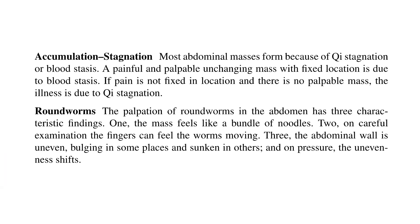Accumulation and stagnation: Most abdominal masses form because of chi stagnation or blood stasis. A painful, palpable, and fixed-location mass that changes is due to blood stasis. If pain is not fixed in location and there is no palpable mass, the illness is due to chi stagnation.